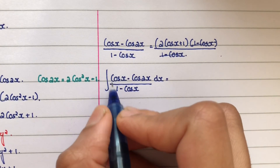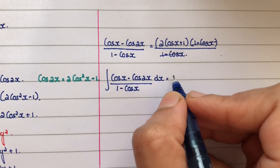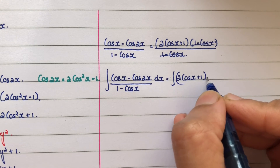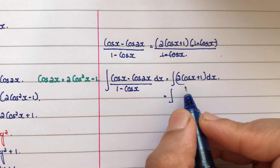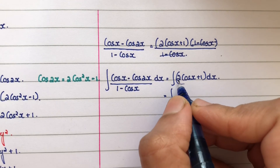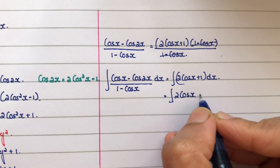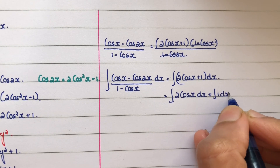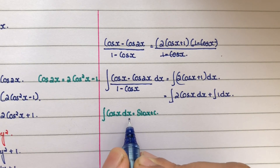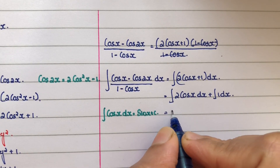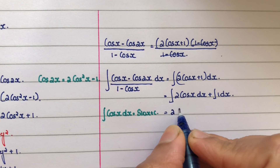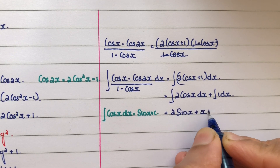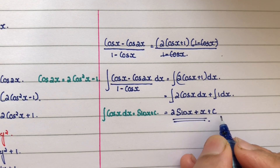Therefore, the integral of (cos x minus cos 2x) by (1 minus cos x) dx equals the integral of (2 cos x plus 1) dx. Splitting: this equals integral of 2 cos x dx plus integral of 1 dx. Since integral of cos x dx equals sin x plus c, this gives 2 sin x plus x plus c. So the final answer is 2 sin x plus x plus c.